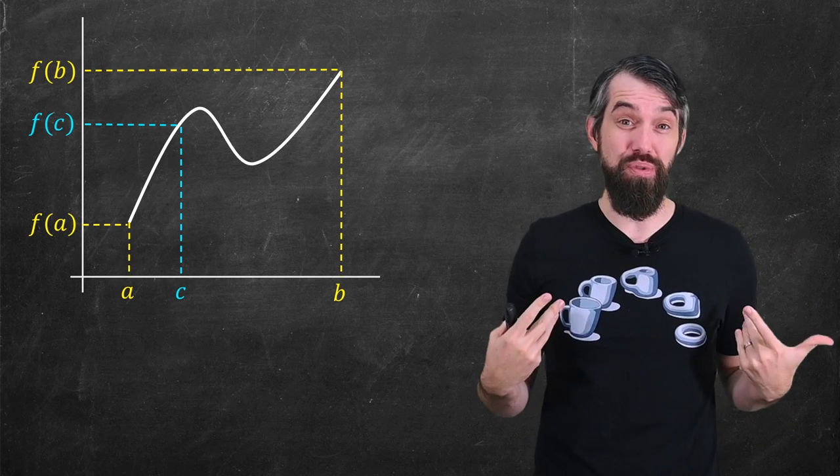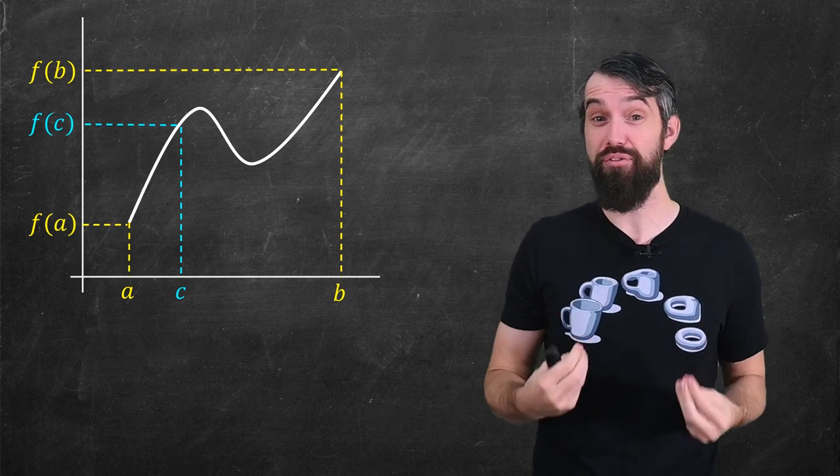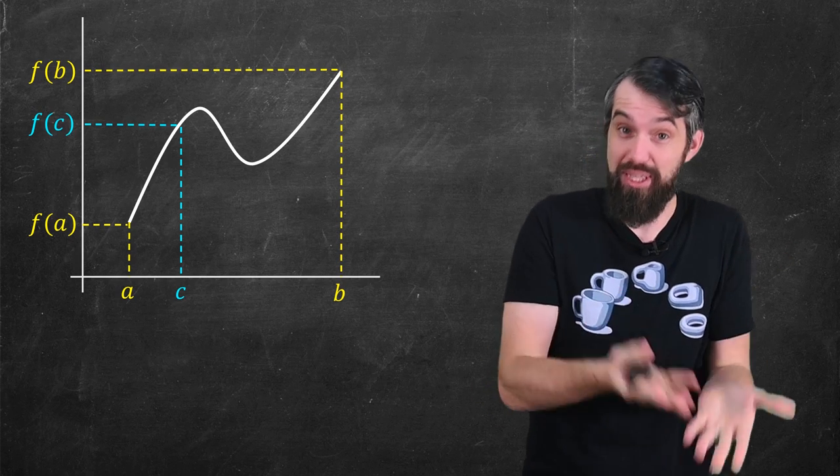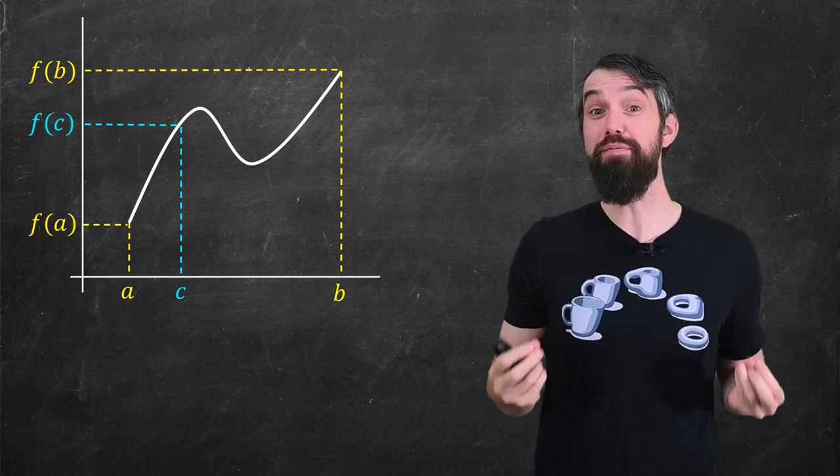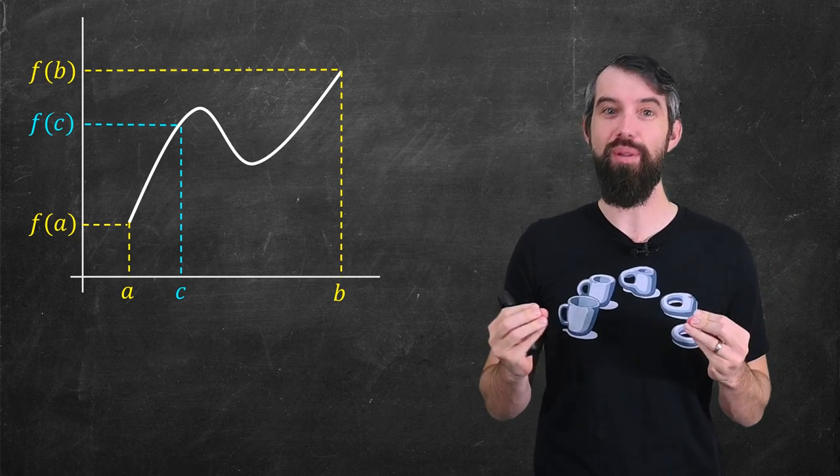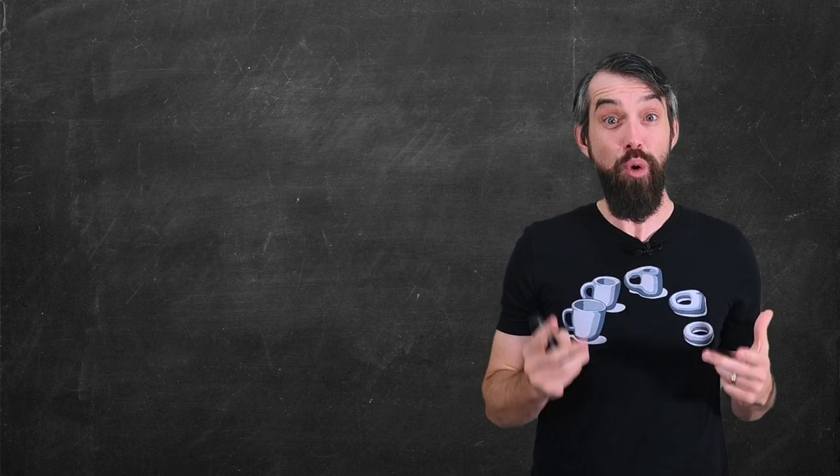This is the same theorem that proves that I was once exactly four feet tall, because when I was born I was less than four feet tall, today I am more than four feet tall, I thus must have been exactly four feet tall at some point in time.